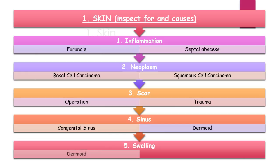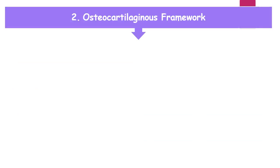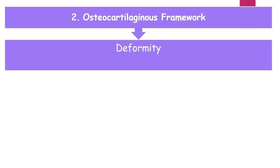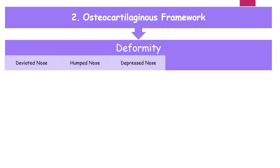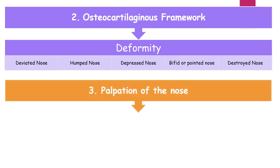Swelling: dermoid swelling, gliomas. Inspection of the osteocartilaginous framework of the nose: the only thing to inspect for in the osteocartilaginous framework is deformity. The possible causes of deformity can be deviated nose, humped nose, depressed or bridged nose, bifid or pointed nose, and destroyed nose.